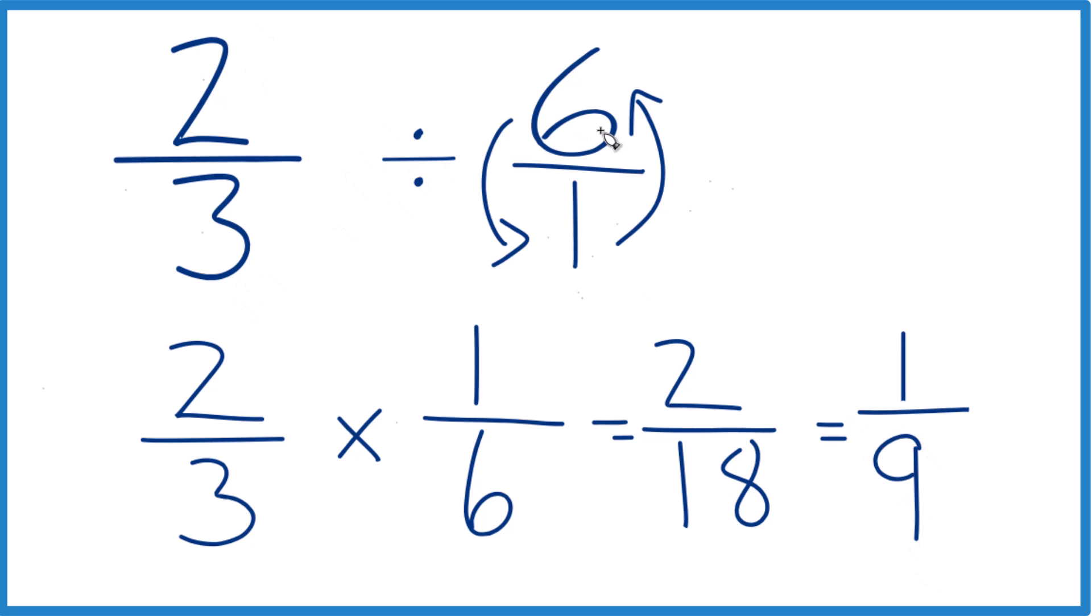So two-thirds divided by six, or you could say two-thirds times one-sixth, that equals one-ninth. This is Dr. B. Thanks for watchin'.